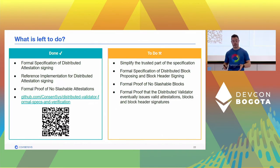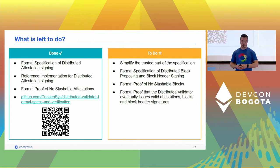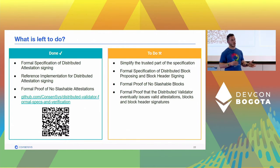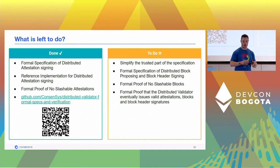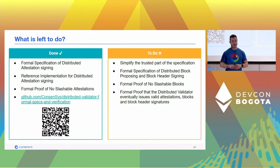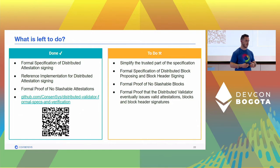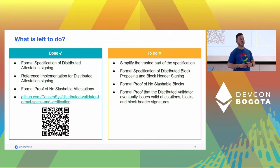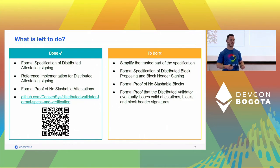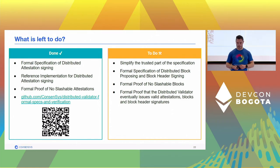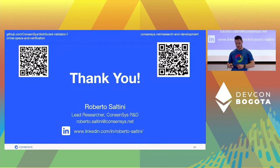What is left to do: extend the specification and reference implementation to cover block proposing and block header signing, extend the formal proof of non-slashable attestation to non-slashable blocks, and add a proof of liveness — proving that a distributed validator will always eventually create a valid attestation, valid blocks, and valid header signatures. That's all from me — thank you for listening.